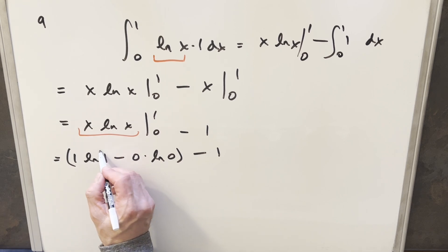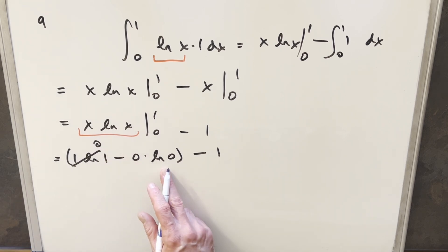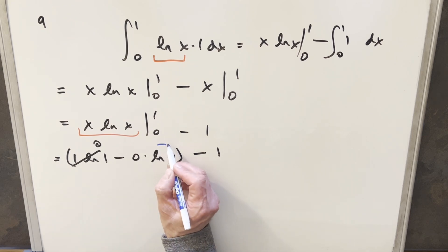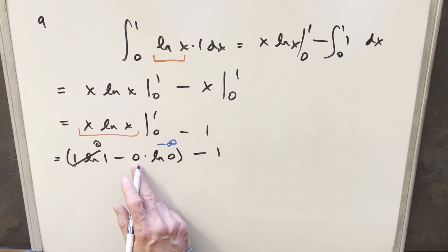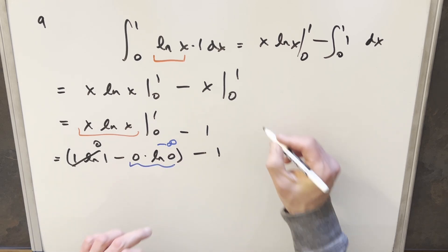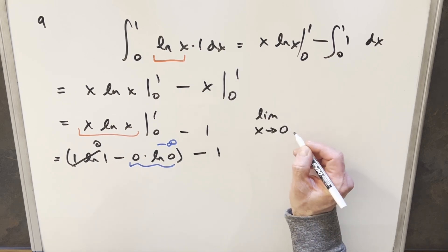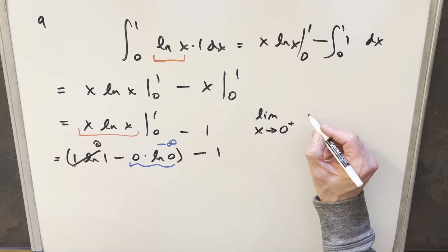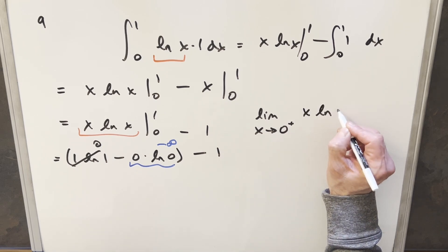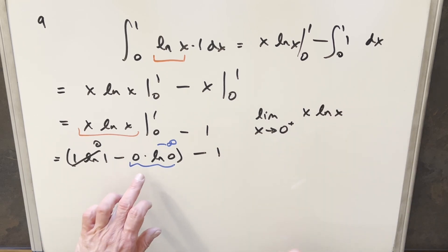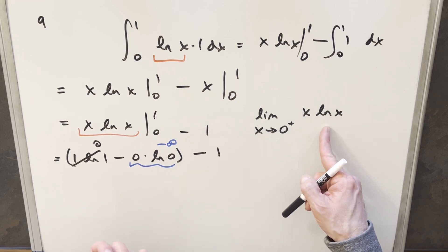But over here, like we saw earlier, natural log at zero goes to minus infinity. So we have the situation where we're multiplying zero times minus infinity. This is an indeterminate form. So we'll break this out as a limit. We're looking at the limit as x goes to zero from the positive side. We're looking at x ln x. This is indeterminate, so we can't deal with the limit in this form. But I can set up L'Hôpital's rule.